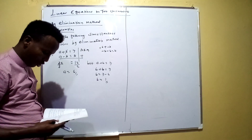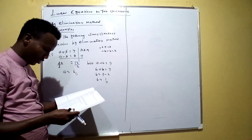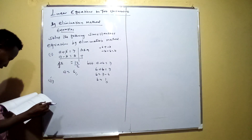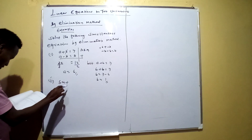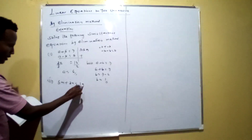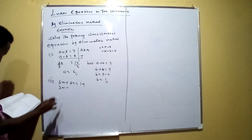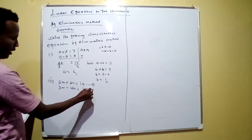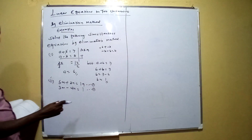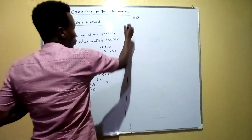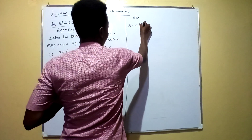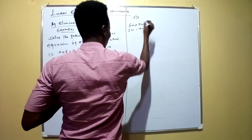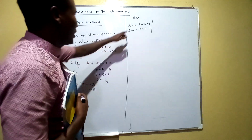Now let's see a situation where the two middle numbers are not the same. Example two: the first equation is 5m plus 2n equals 19, and the second equation is 3m minus 4n equals 1. We have equation one and equation two.